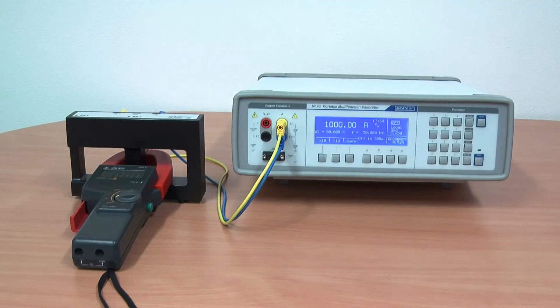50 turn coils can be utilized for calibration of clamp meters up to 1000A. Let's try it out.